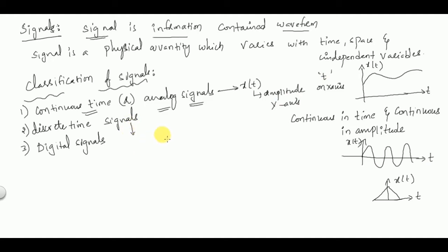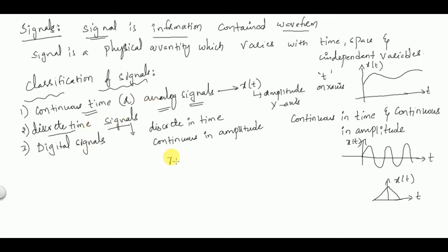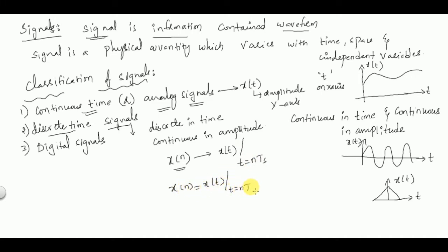Discrete time signals are discrete in time but continuous in amplitude. Discrete time signals do not exist physically, so we sample continuous time signals in order to obtain discrete time signals. Discrete time signals are generally represented by x(n), obtained from x(t) by sampling it at nTs, so x(n) = x(t) at t = nTs.